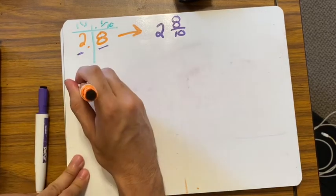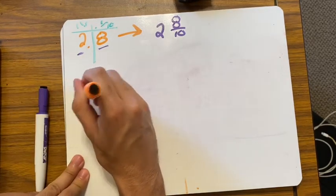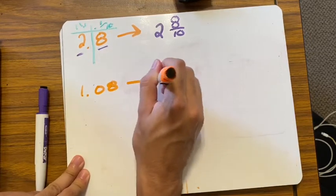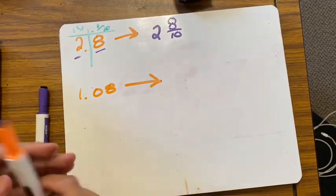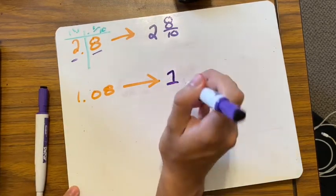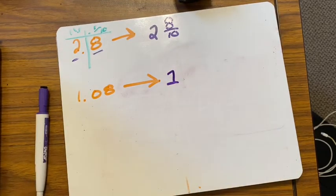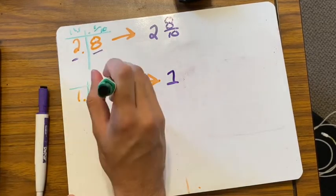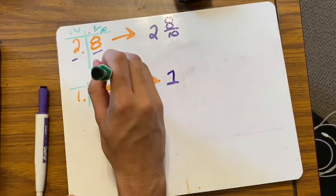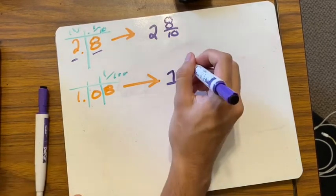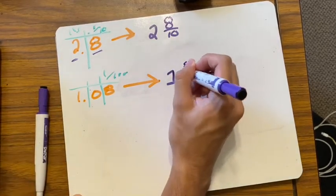Let's try 1.08. I have a whole number: one. What place value is my eight in? It's in the hundredths place. So I have eight hundredths: one and eight hundredths.